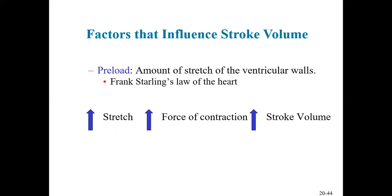There are three factors that influence stroke volume. The first is preload — how much stretch is inside the ventricular walls, determined by how much blood is returning to the heart. Frank-Starling's law of the heart states that if there is an increased amount of stretch — for example, from extra blood flow returning due to fluid retention — the ventricle walls stretch, causing a reflex action that makes the heart muscle contract with greater force, increasing stroke volume.